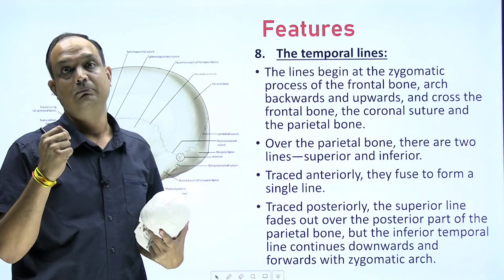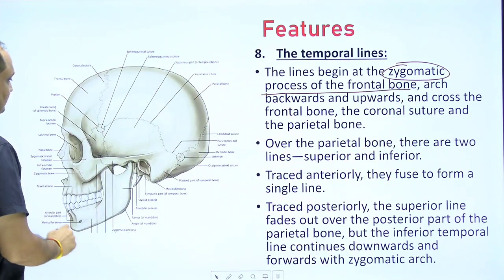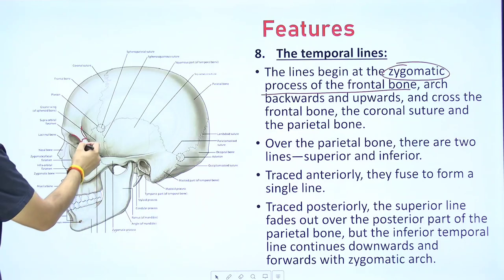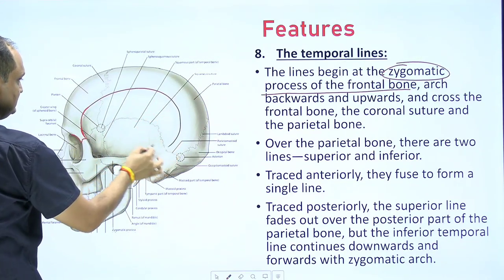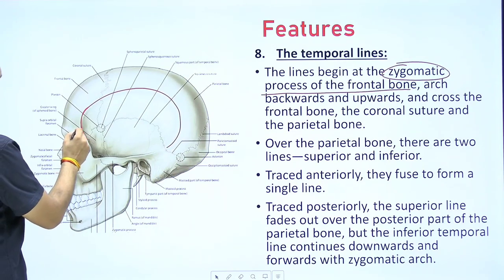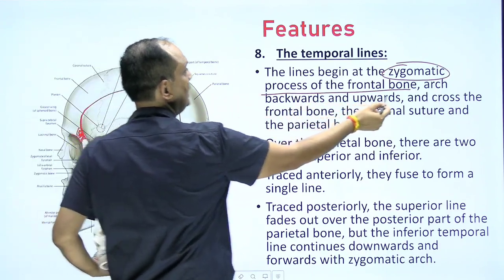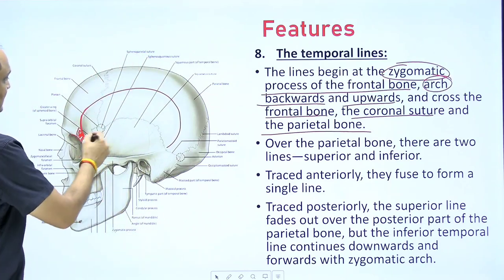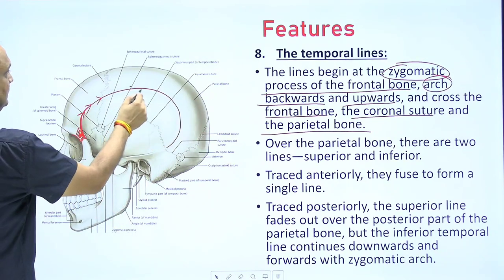The temporal lines are two in number. The lines begin at the zygomatic process of the frontal bone. They arch backward and upward, crossing the frontal bone, the coronal suture, and the parietal bone. So it starts from the zygomatic process of the frontal bone, goes upward and backward, crosses the coronal suture, and then comes onto the parietal bone.